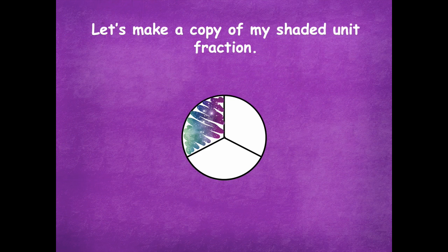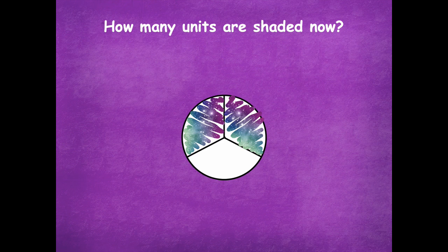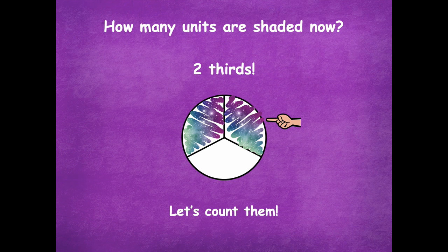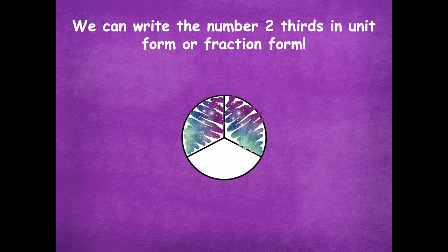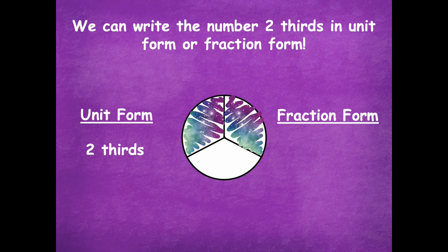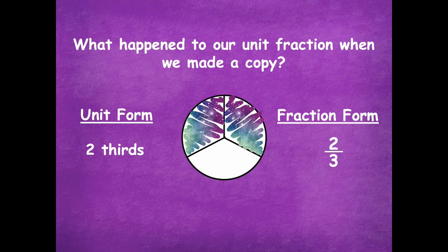So if I shade that in, let's make a copy of my shaded unit fraction — we're going to make a copy of the one-third. Now, how many units are shaded? Two-thirds. Let's count them: one-third, two-thirds. We can write two-thirds in unit form or fraction form. Unit form is just 'two thirds.' Fraction form, written numerically, is two over three — two of the parts, and three total equal parts. When we made a copy of the unit fraction, we started with one unit shaded and then shaded another to make a copy. Two copies make two-thirds.